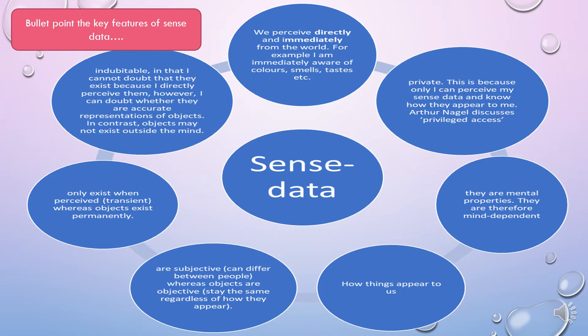Let's look at sense data in more detail. Sense data is what we directly and immediately perceive — the things we are immediately aware of. Sense data is also private. I can only know my own sense data and you can only know yours, because this is how the world appears to me. Arthur Nagel discusses this idea of sense data as something to which we have privileged access because it is private.